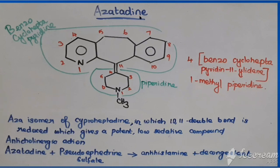Compare the structure of azatadine with cyproheptadine — only two differences. First, azatadine is an aza-isomer because it is having nitrogen, but cyproheptadine is not having nitrogen. The second difference: azatadine has a double bond between positions 10 and 11 in the cycloheptane ring, but in cyproheptadine that double bond is absent.